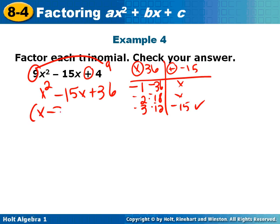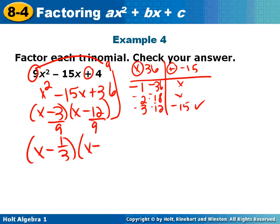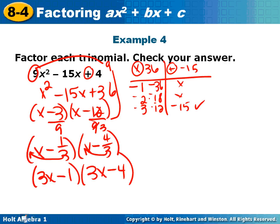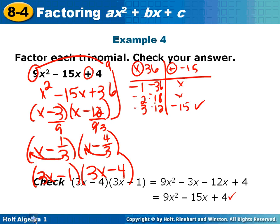Fill your numbers in, x minus 3 and x minus 12. I need to slide the 9 back under. So, I get x minus, reduce, you get 1 third. And x minus, 3 goes into 9, 3, 4 thirds. Switch the 3 back to the front. 3x minus 1, 3 back in front. 3x minus 4. Now, I put the check on here, right here. So, you can see that it really does work.